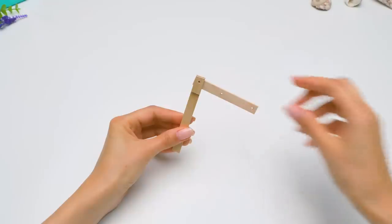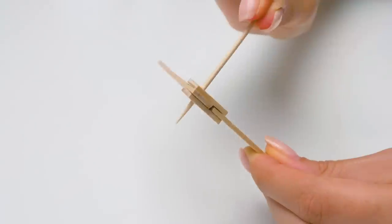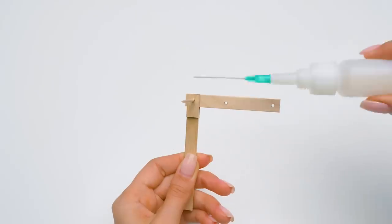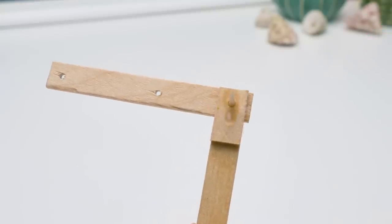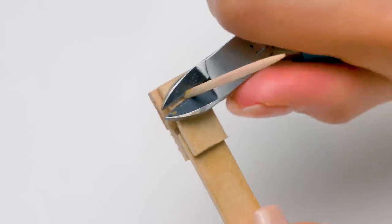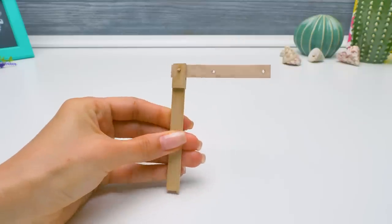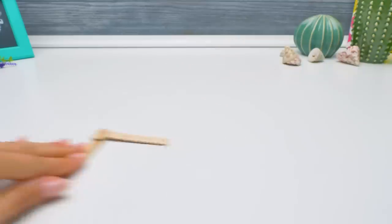For now, it's unclear what this is, but soon we'll have a whole mechanism. Let's glue one more toothpick. Now turn it this way. And remove the extra parts. What a perfect piece! Cool! Let's put it aside for now.